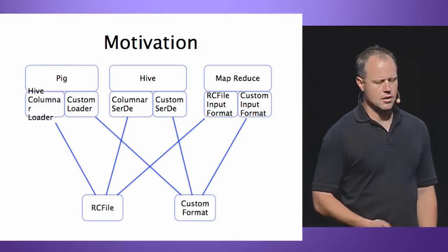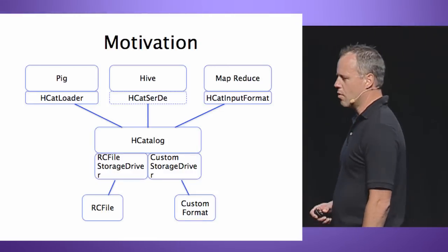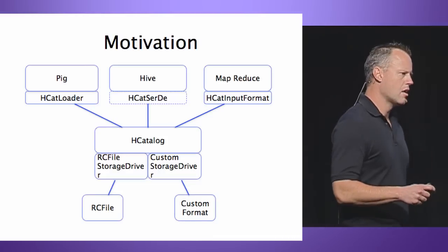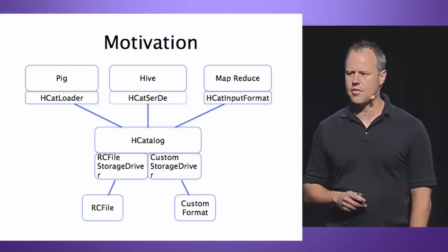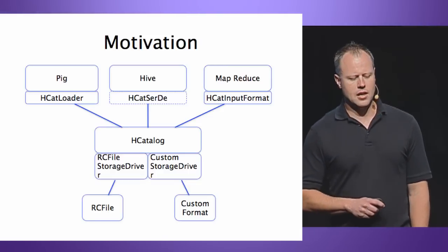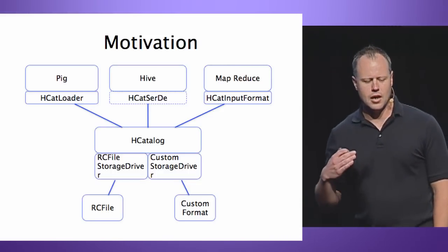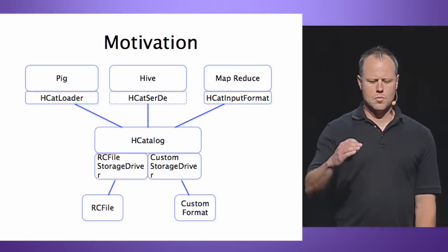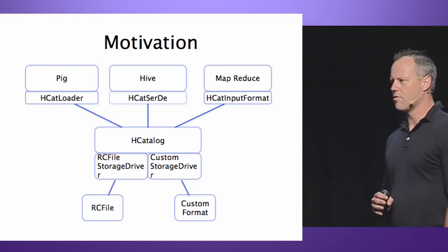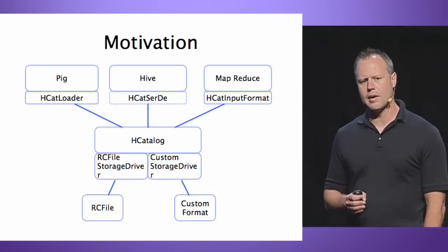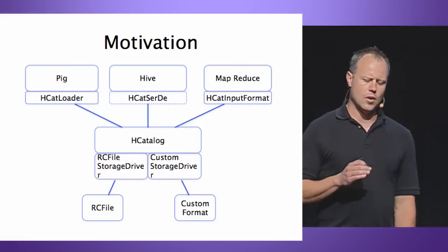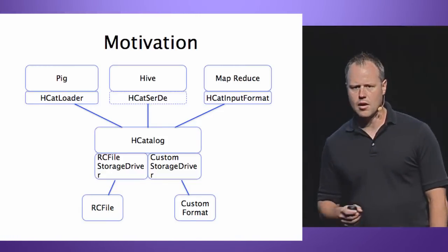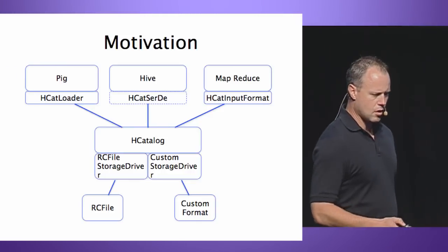That is exactly the problem that HCatalog sets out to resolve. HCatalog is a table manager for Hadoop. It presents a table layer to Hadoop users, so you no longer have to think about your data stored in HDFS as a set of files — you can now think about it as a set of tables. We have written, or are in the process of writing, interfaces between all the major tools and HCatalog. If you're using Pig, MapReduce, or Hive, you just address the data as being in a table. HCatalog worries about the right storage format, what loader or input format it needs to use, and also provides schemas and a shared data model.